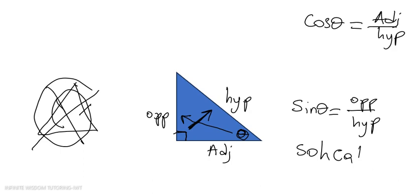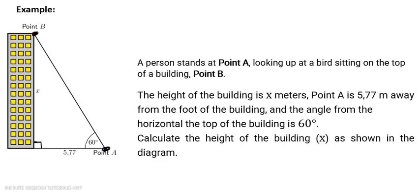Now the example we have says we have a point which is point A at the bottom, and we have another point which is point B at the top. And we are having a vertical line called x, and it is at 90 degrees with the horizontal line which is given as 5.77. Let's read the information first. A person stands at point A, so here we will assume there is a person. Ignoring the height of the person, a person standing at point A looking up at a bird sitting on top of a building.